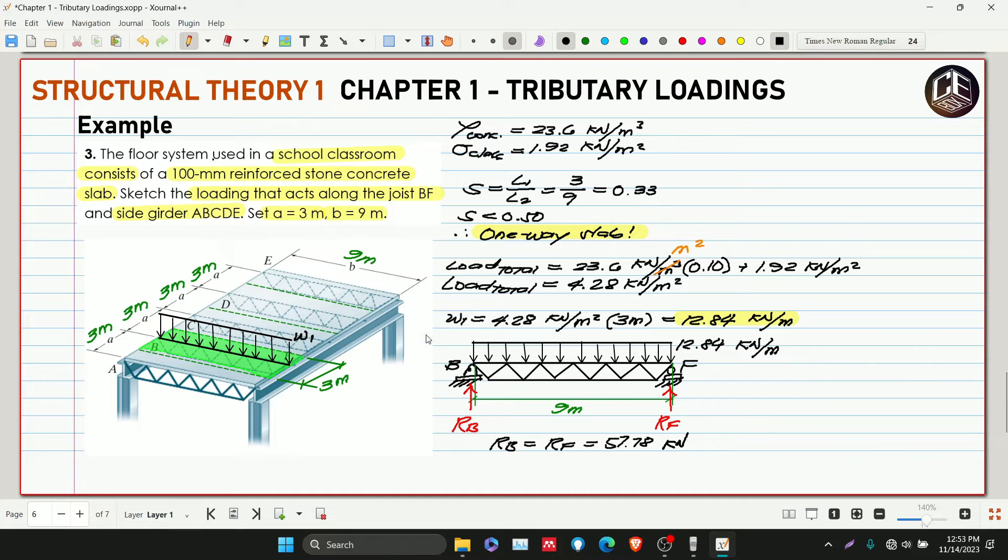So where will this go? The reaction is here upward, then it becomes downward here for B, and here for F. Same for C at this point, and for D at this point. The question is, at A, this point, and E, are they equivalent to 57.78? No, why?